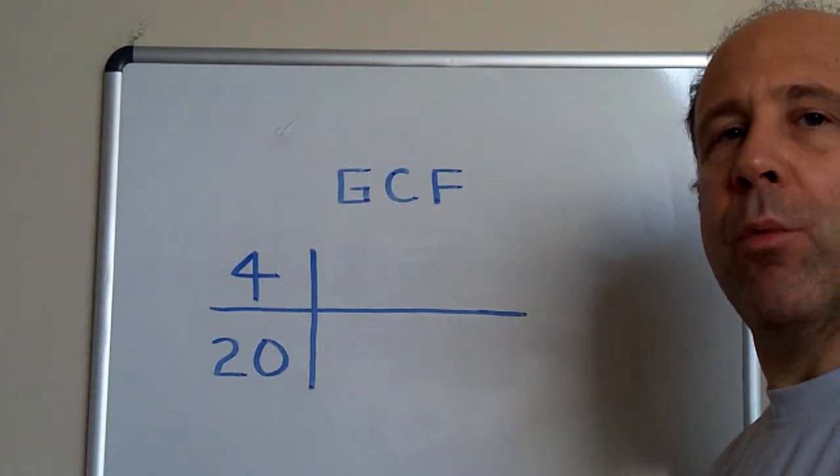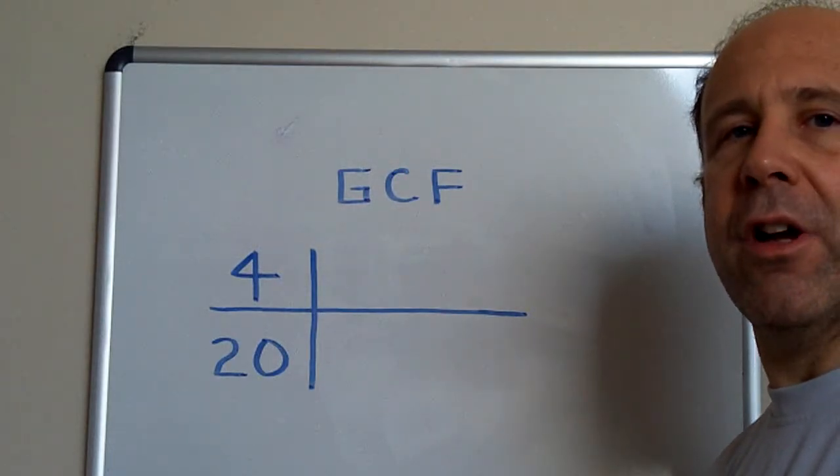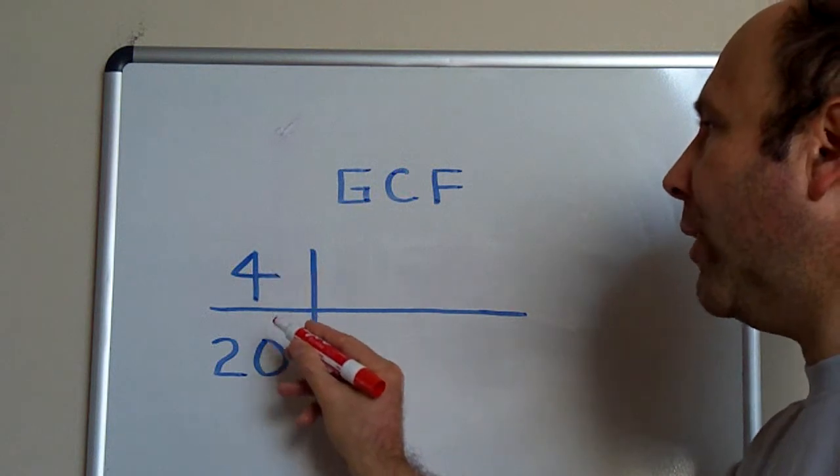Let's say, for example, that we want to find the GCF, or greatest common factor, for 4 and 20.